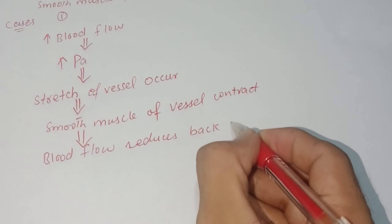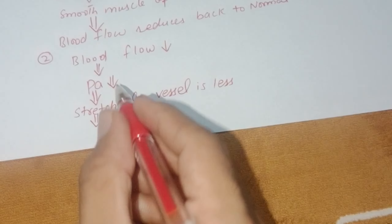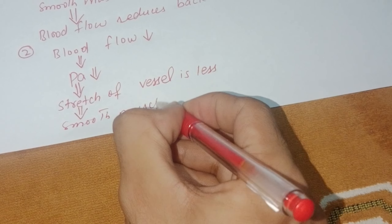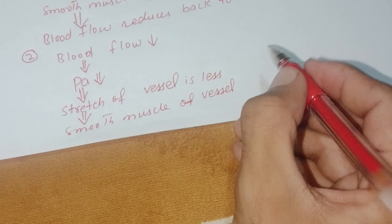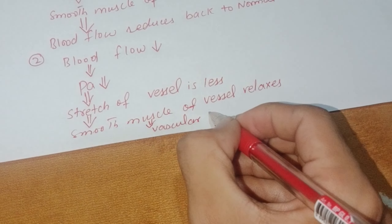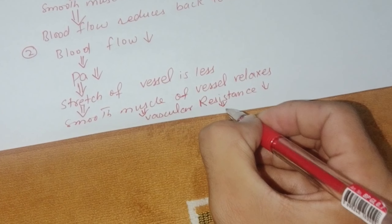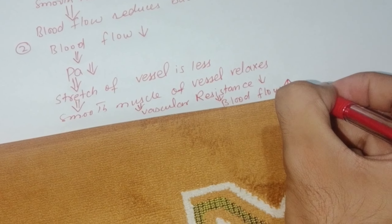Case two: if blood flow decreases, then arterial pressure decreases. The stretch of the vessel is less, so the smooth muscle of the vessel relaxes, vascular resistance decreases, and blood flow increases back to normal.